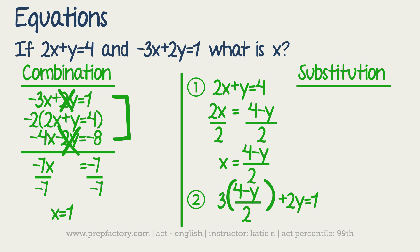But now you have negative 3 times 4 minus y over 2 plus 2y is equal to 1. So first you want to distribute this 3. So I could take this equation at the bottom, so negative quantity 12 minus 3y divided by 2 plus 2y equals 1.